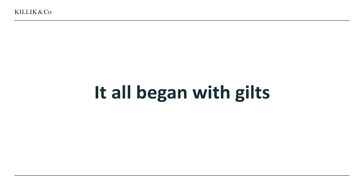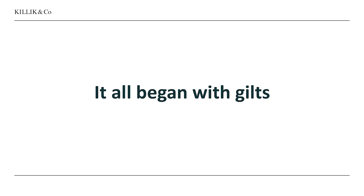It all began with gilts. We need to look at the gilts market to see why people are suddenly thinking this could happen in the UK, just as it's already happened in places like the eurozone and Japan. The UK government is seen as a very safe place to lend money because basically it's unlikely to go bust. So people are prepared to do deals with the UK government on terms that might seem crazily unattractive to the average person.